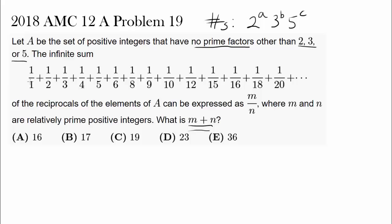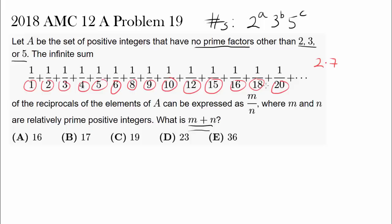So we have 1, 2, 3, 4, 5, 6 — 7 doesn't count — 8, 9, 10 — 11 doesn't work — 12 — 13 doesn't work — 14 doesn't work, because 14 contains 7 in the prime factorization. And we have infinitely many of them.